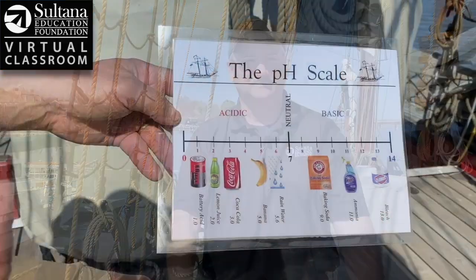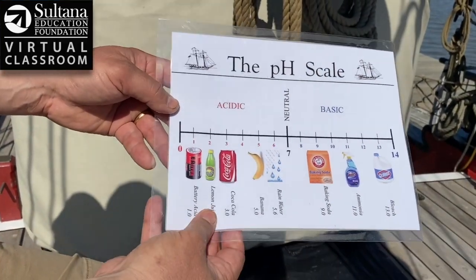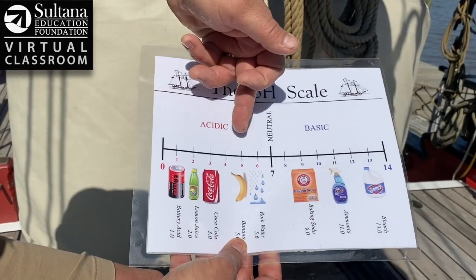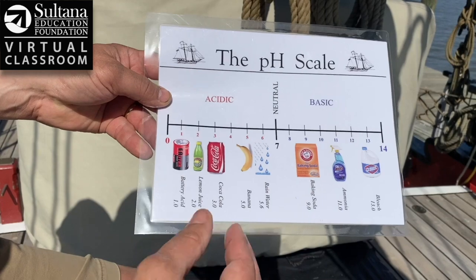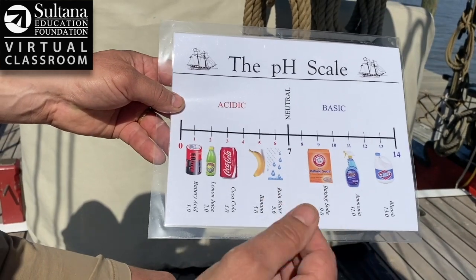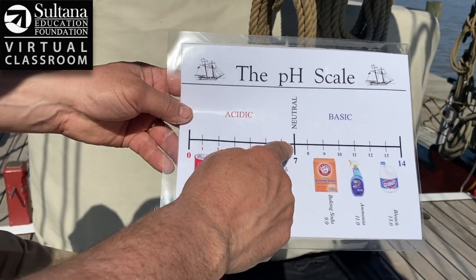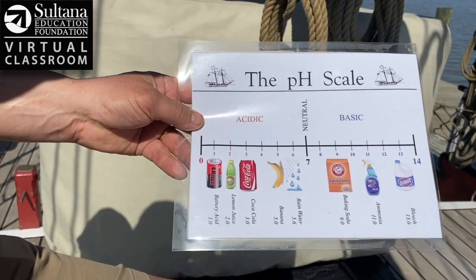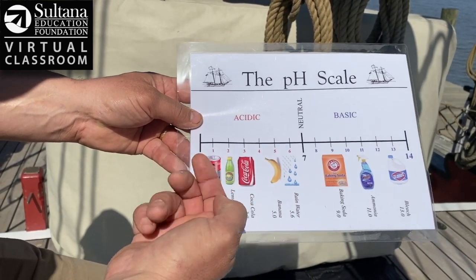Bringing this down to terms that the average person can understand: when we measure pH, it's measured on a scale between 0 and 14. If there's a perfect balance of hydrogen and hydroxide ions, you have H2O, or pure water, which has a pH of 7 — we consider that to be neutral. Anything with a pH below 7 is acidic.